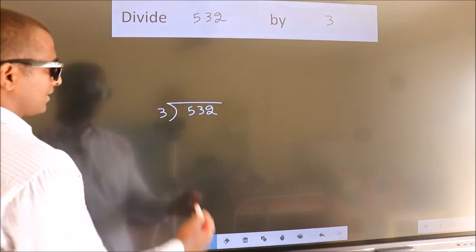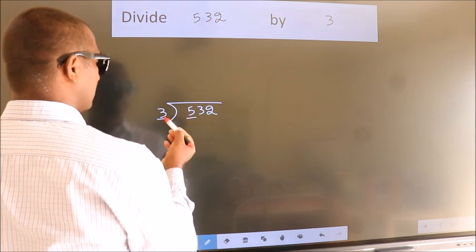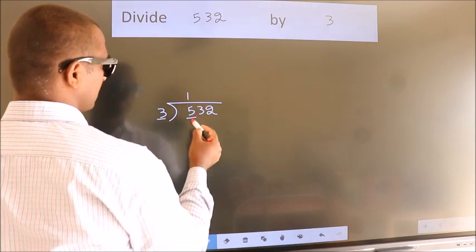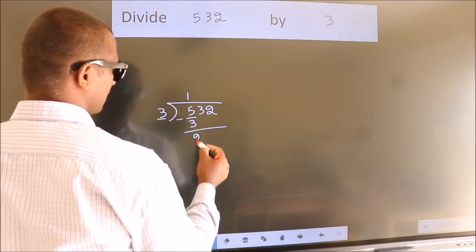Next, here we have 5, here 3. A number close to 5 in 3 table is 3 1s 3. Now, we should subtract. We get 2.